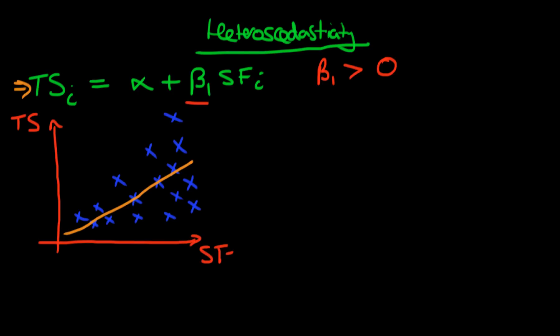But notice something else about our data and our model. As school funding tends to increase, the average distance which points tend to be away from the line tends to increase. So we've actually got heteroscedasticity.